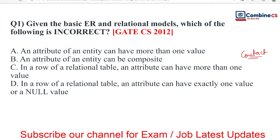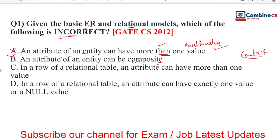Now let's talk about Question 1: Basic ER model and relational model. You were asked to find the incorrect statement. Option A: 'An attribute of an entity can have more than one value' — this is a true statement because we have multi-value attributes in the ER model. Option B: 'An attribute of an entity can be composite' — again true, because we have composite attributes. So these two options are wrong answers to the question.